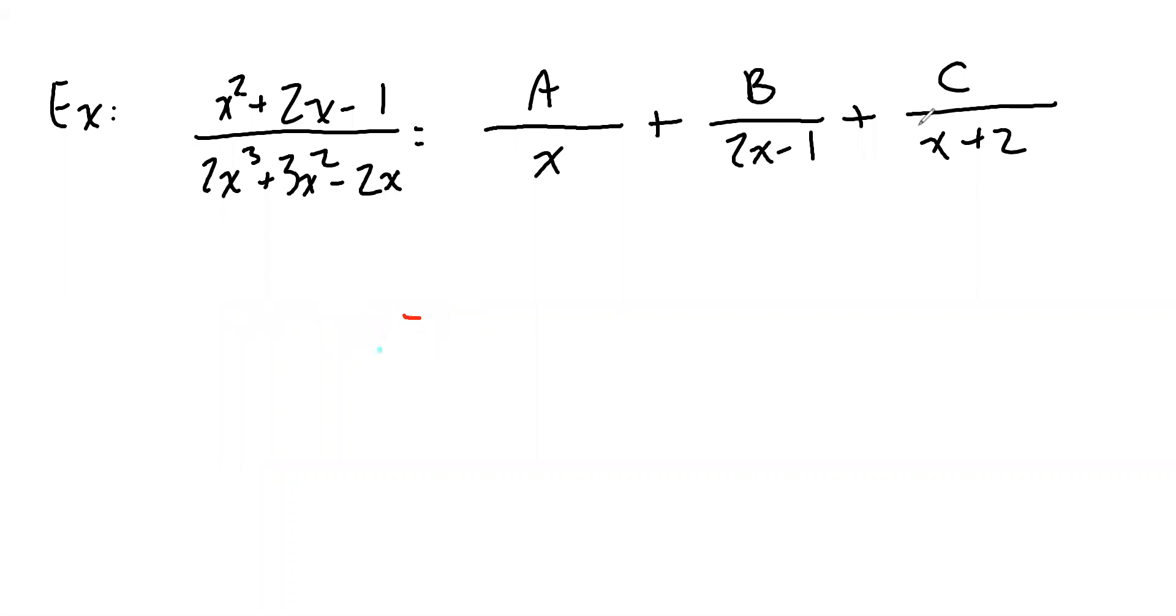So we know our partial fraction decomposition has to be of this form. But now to find the A, B, and C. So how do we do this? Well, the first thing you do is you multiply everything by the denominator, by the denominator of the original polynomial function. I'm going to cross this out and replace it with what it factored into.